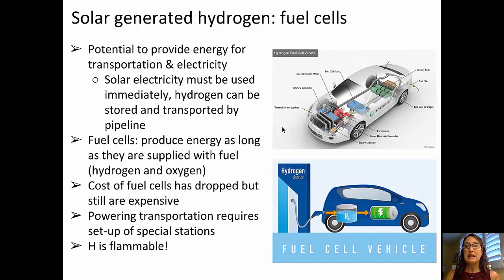Solar-generated hydrogen in fuel cells has the potential to provide electricity for transportation. Solar electricity must be used immediately; however, hydrogen can be stored or transported by pipeline. Fuel cells produce energy as long as they are supplied with hydrogen and oxygen. The cost of fuel cells has dropped, but they're still rather expensive. Powering transportation with fuel cells will require setting up special stations. You can see a picture of a hydrogen station and a hydrogen fuel cell vehicle shown here.